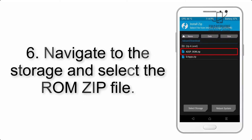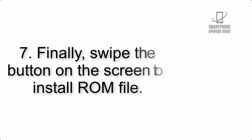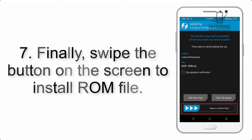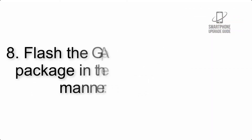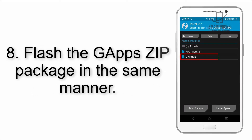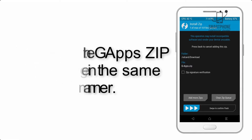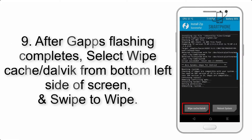Step 5: Go back to the recovery main screen and tap on the Install button. Step 6: Navigate to the storage and select the ROM zip file. Step 7: Finally, swipe the button on the screen to install the ROM file.